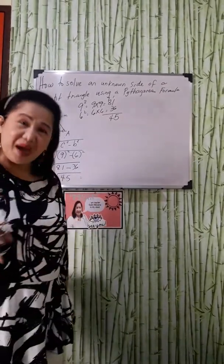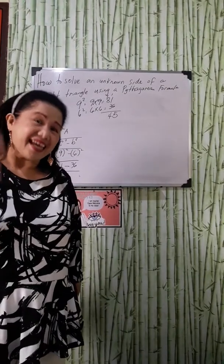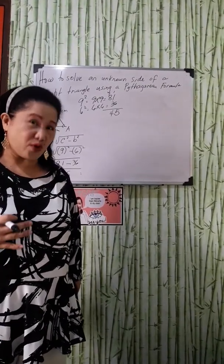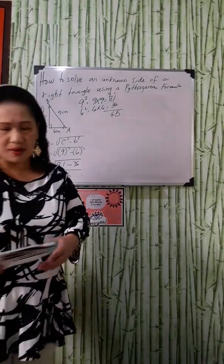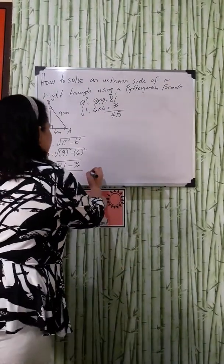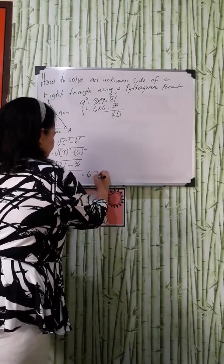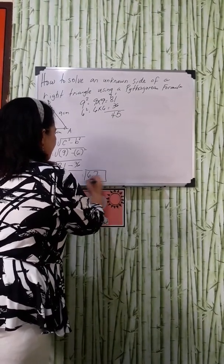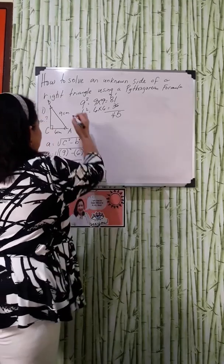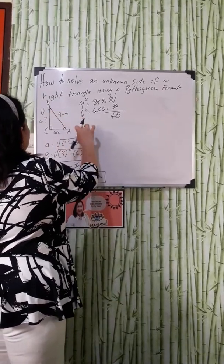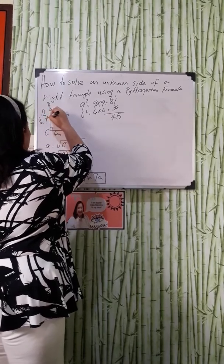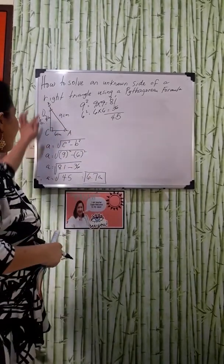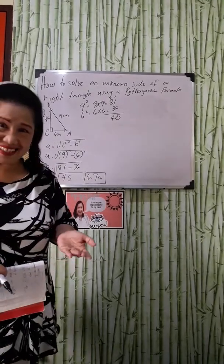If you have your calculator there, guys, get the square root of 45. The value of square root of 45, that is equal to 6.7. This is now the value of our side A. 6.7 centimeters. These are now the given. Did you get it, guys?